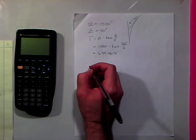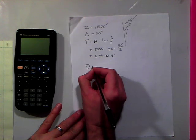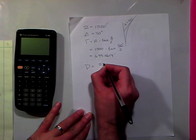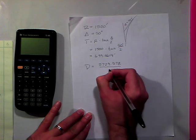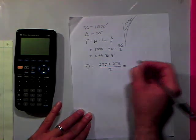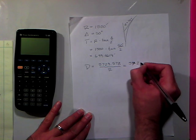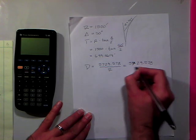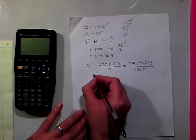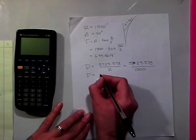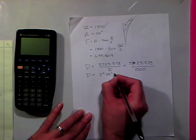We'll also need our degree of curvature, and that formula, this degree of curvature equals 5729.578, divide that by the radius. So if we divide that by the radius, which is 1500 feet, our degree of curvature equals 3 degrees, 49 minutes, and 11 seconds.